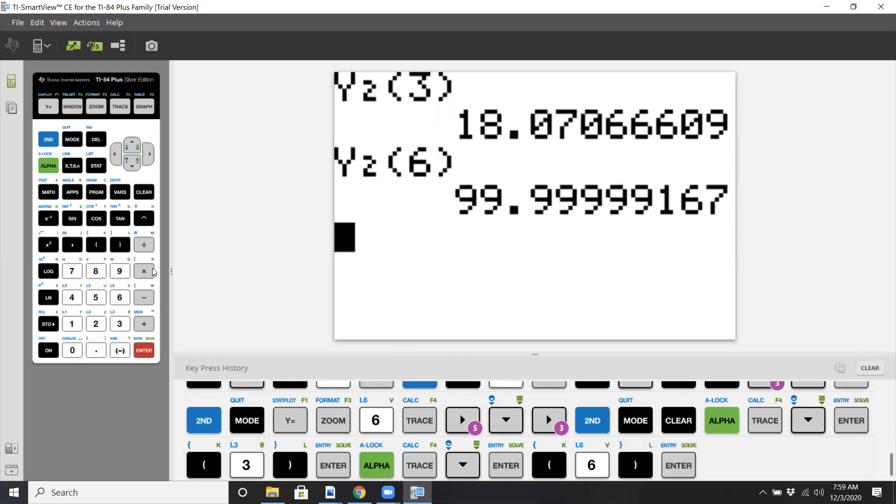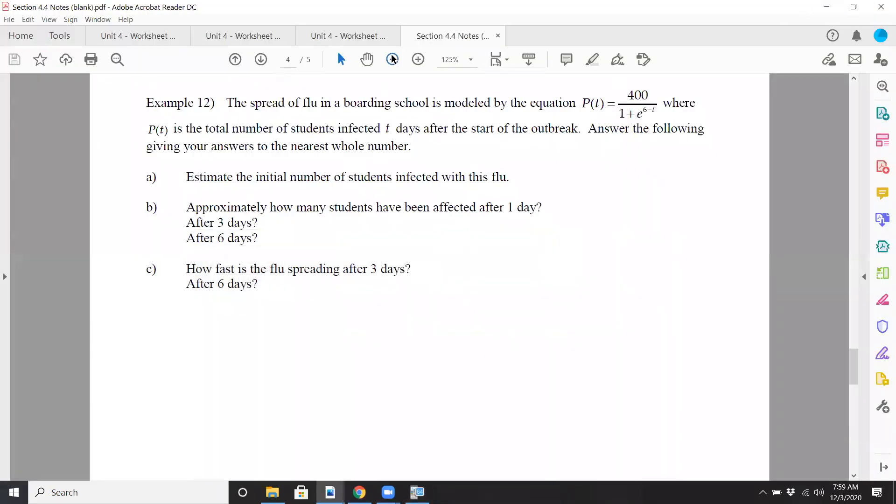Okay. So actually, it was increasing quickly on day 6. I was wrong. So what this means, we had about 18 and 100. So P prime of 3 was 18 and P prime of 6 was 100. So what this means is that 18 people per day are getting infected on day 3. Where on day 6, 100 people per day are getting infected. So you can see why it's tremendously important to contain viruses.